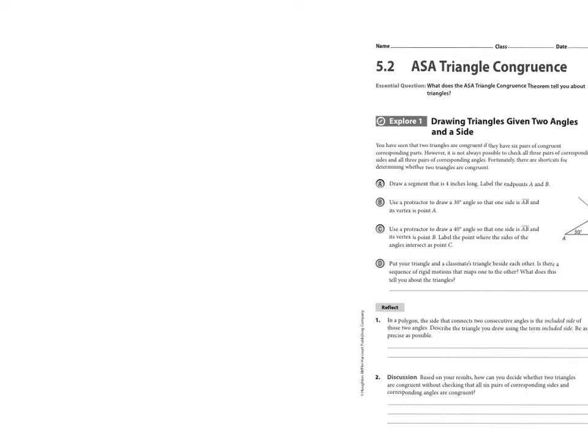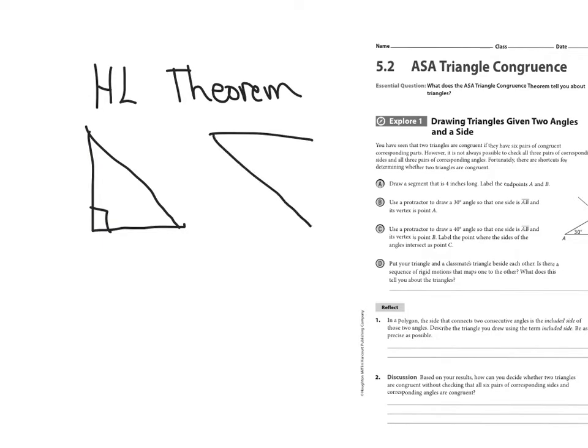The only triangle congruent theorem that we have not talked about is hypotenuse leg theorem. And what that theorem says is that if you have a right triangle, two right triangles, and they have a leg that's congruent and a hypotenuse, then we know that those two triangles are congruent. And that was the only one that I didn't discuss the other day.